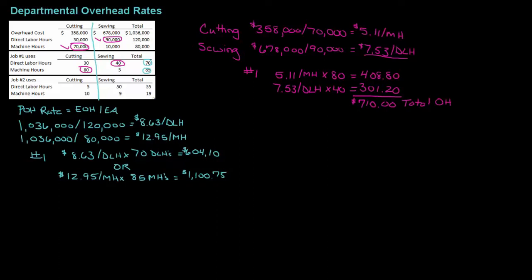Notice that $710 falls somewhere in the middle compared to the two plant-wide rate results. This is giving me a more exact figure because I'm applying the cutting department rate based on what's important to cutting — machine hours — and for sewing I'm using what's more important there — direct labor hours. This gives a much more accurate calculation than the plant-wide predetermined overhead rate.